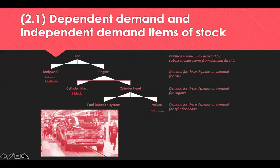A dependency tree can be created to demonstrate independent and dependent demand. In this instance, the finished independent product is a car. The car will require four doors and a tailgate — the demand for these will be dependent on the demand for cars. The car will also require an engine, and the engine will require cylinder heads. The number of heads is dependent on the number of engines, which are dependent on the number of cars, and so on.